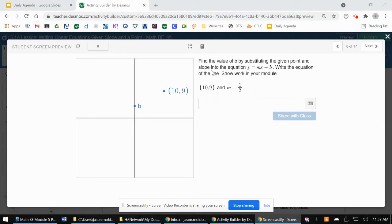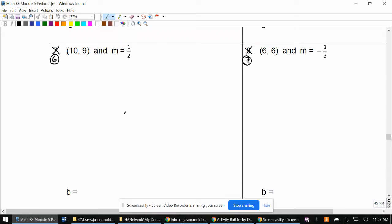All right, we are looking at the next problem, which wants us to write the equation of the line that passes through the point (10, 9). It has a slope of one half, and in the module, this is number 6.